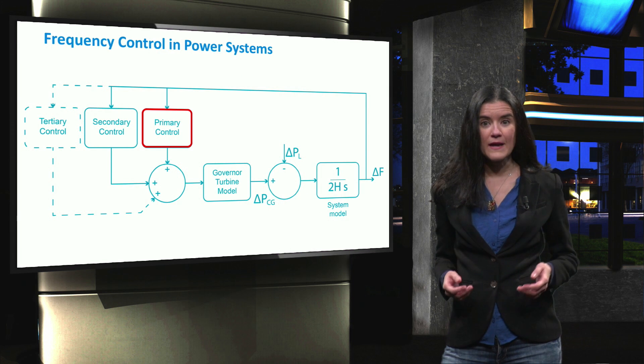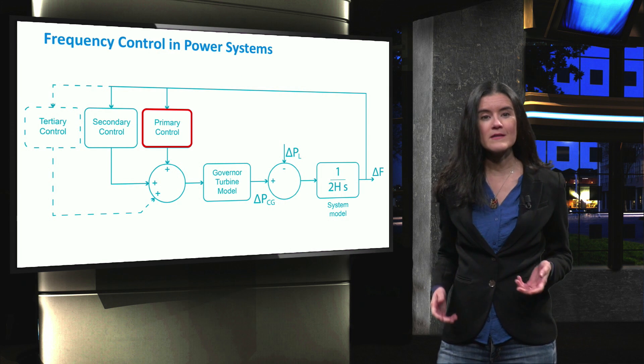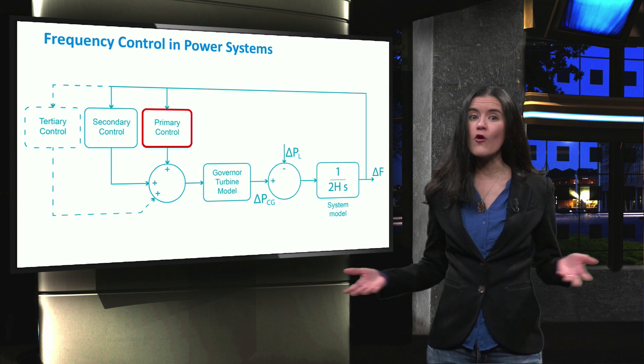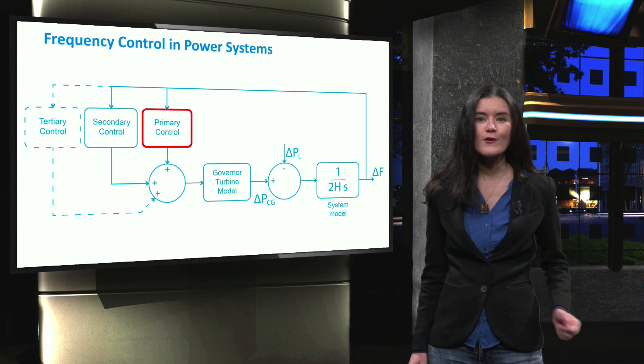Primary control is the mechanism to restore the active power balance in a power system. The centrifugal governor, or speed governor, plays an important role in all levels of the frequency control, including primary control.